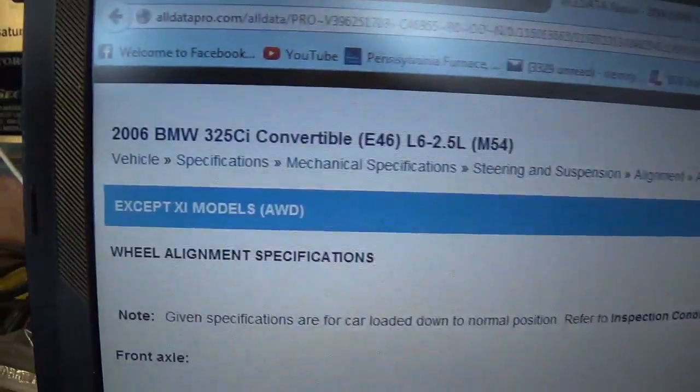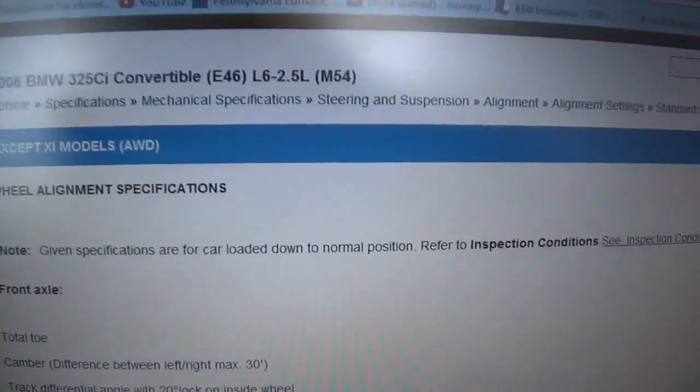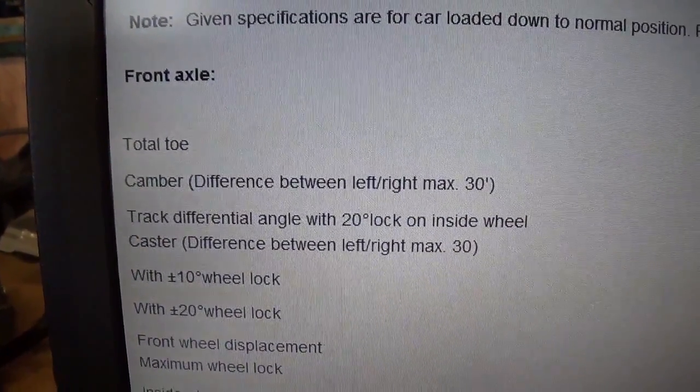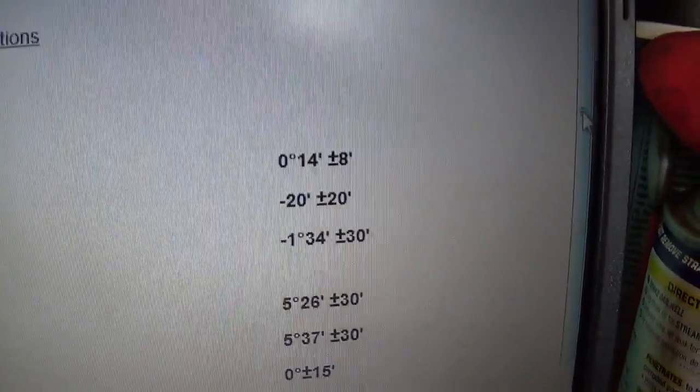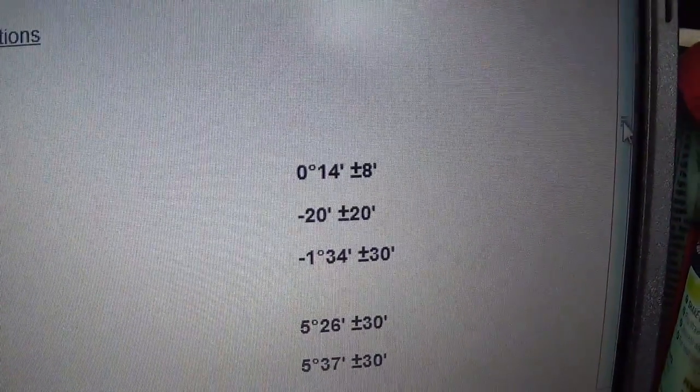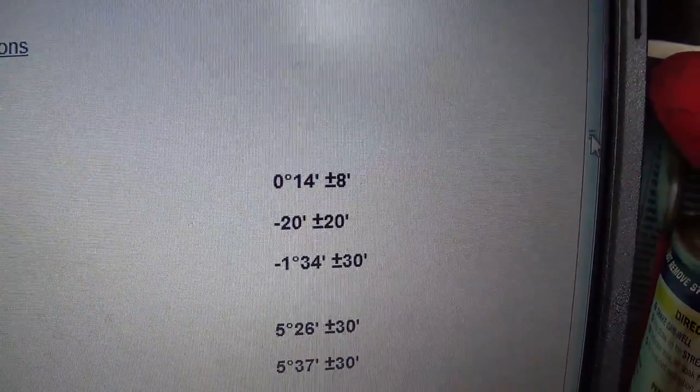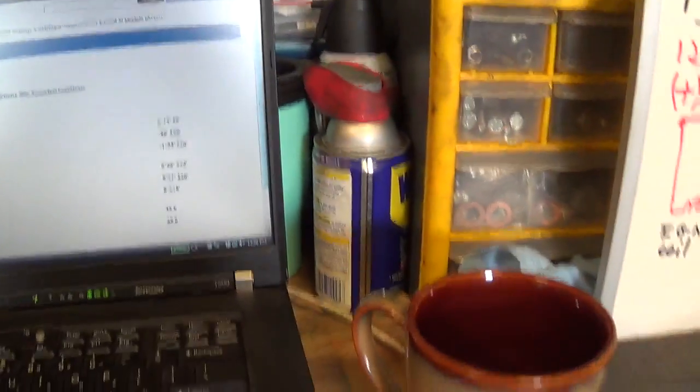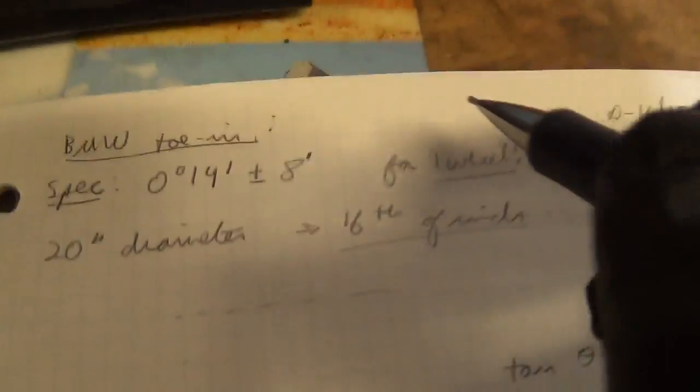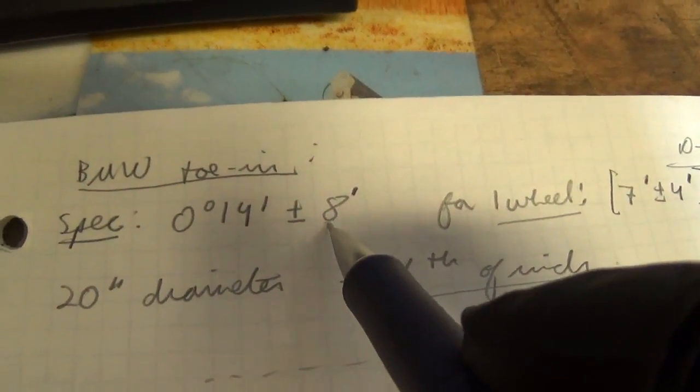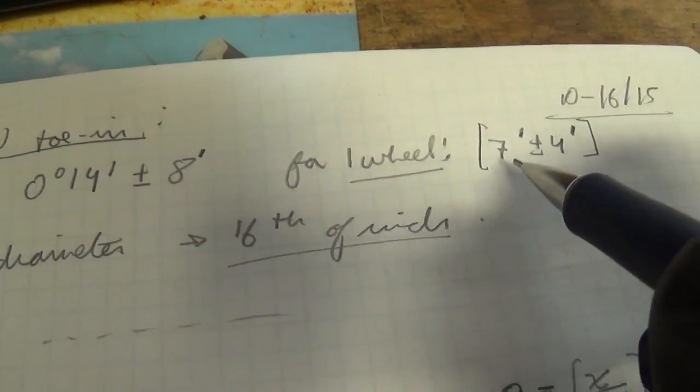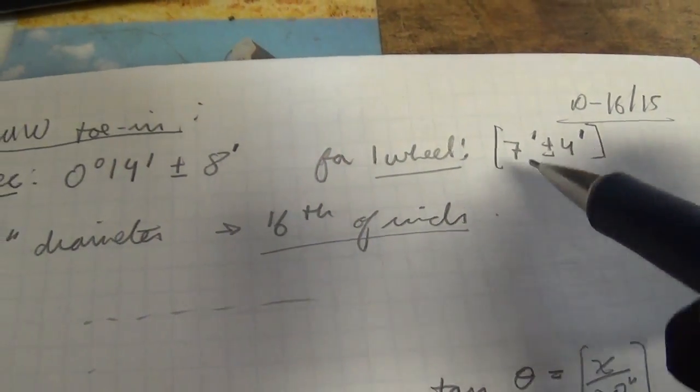Alright, here we are, 06 BMW, standard suspension, front axle, so all we're interested in is the total toe, come over here, it is 0 degrees, 14 minutes, plus or minus 8 minutes, total toed in, okay, it's positive, so obviously the wheels are pointing in. So let's do a little trig here, so that's our spec, so for one wheel, we divide those numbers in half, so for one wheel, we want 7 minutes plus or minus 4 minutes toed in.